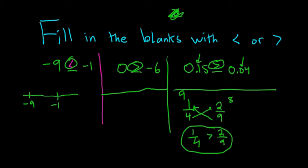Super cool trick, right? A really clever way to determine which fraction is bigger. So you do 4 times 2 is 8, 9 times 1 is 9, so 9 is bigger than 8, so 1 fourth is bigger than 2 ninths. Really nice stuff.